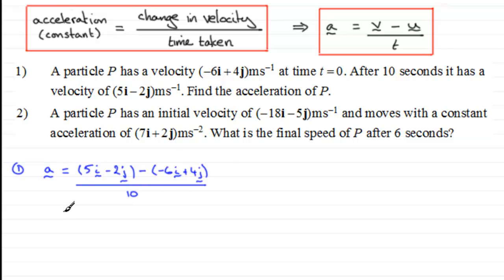So if we work this out, we take the i components: 5 minus -6, so that's going to be 11i. And then for the j components, we've got -2 minus 4, so that's going to be -6j there. And that's all divided by 10, so if we divide 11 by 10, we get 1.1i, and then if we divide the 6 by 10, we're going to get 0.6j.